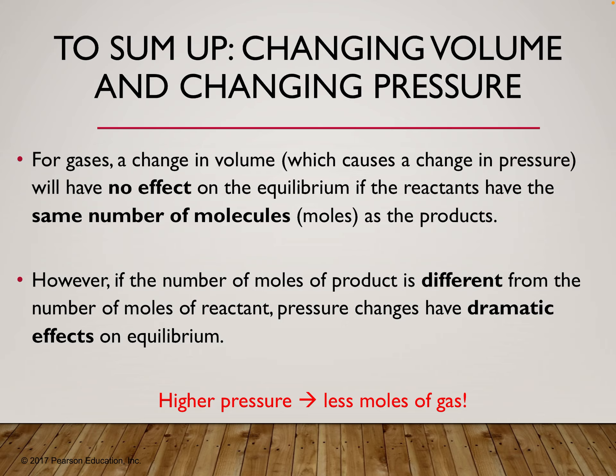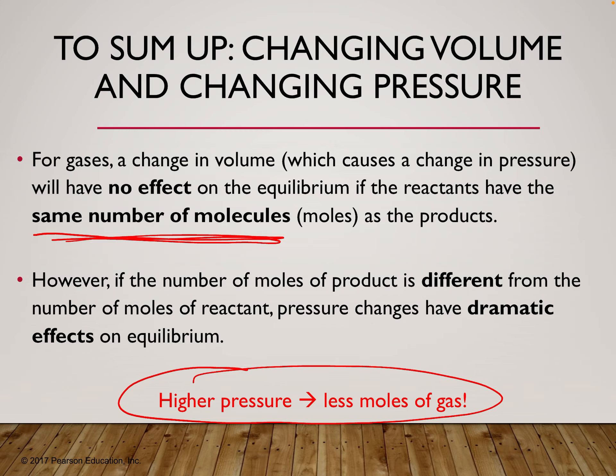To summarize: when we have a change in volume — which causes a change in pressure — it will have no effect on the equilibrium if both sides have the same number of gas molecules. For example, if you had two moles of gas on each side and changed the volume, the equilibrium stays the same. However, if the number of moles differs on each side, the pressure change will have a big effect. High pressure or small volume means shift to fewer moles of gas — think of it as less room, so we shift toward the side with fewer gas molecules.